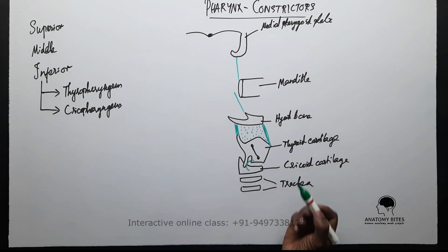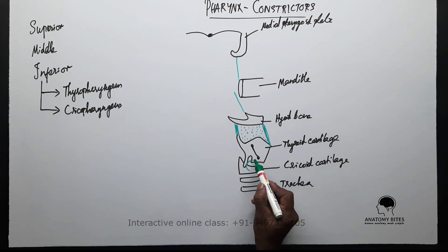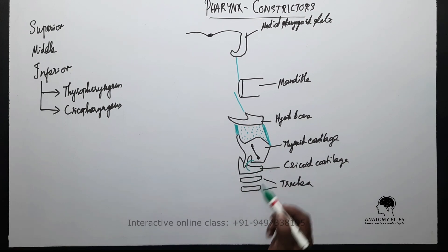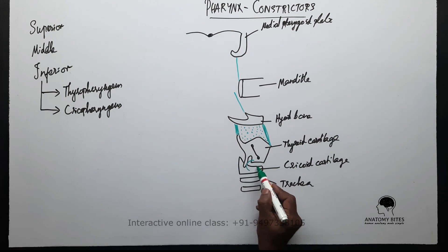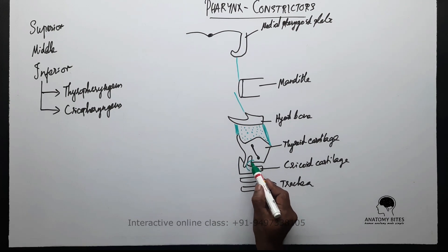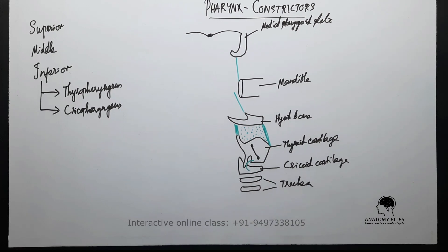There is a tendinous arch extending between the thyroid cartilage and the hyoid bone which actually overlaps a tiny muscle of the larynx named the cricothyroid muscle.